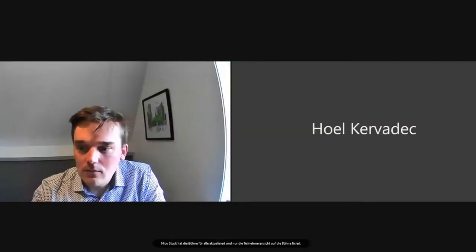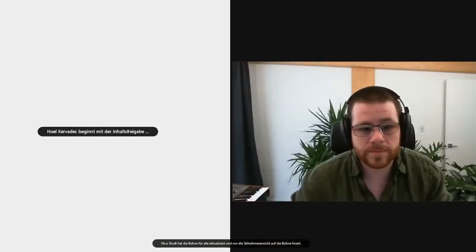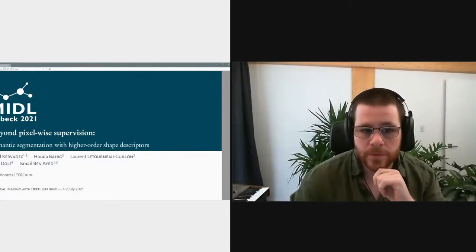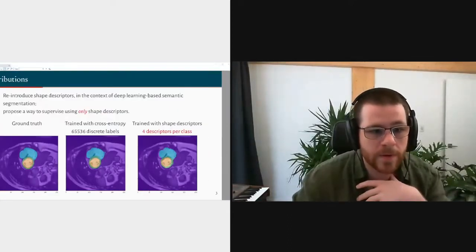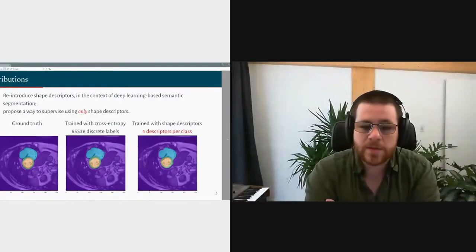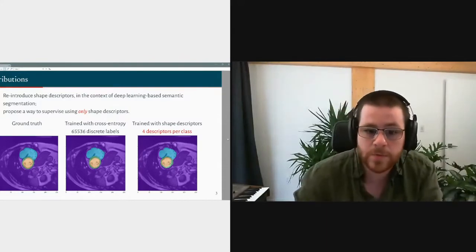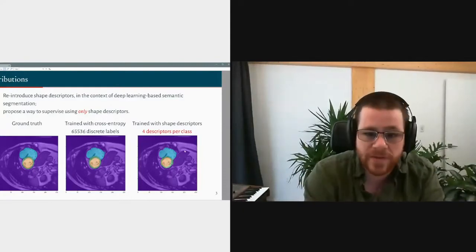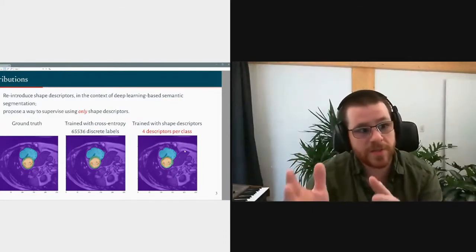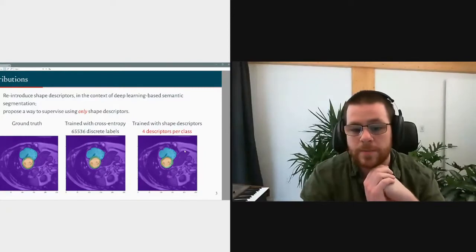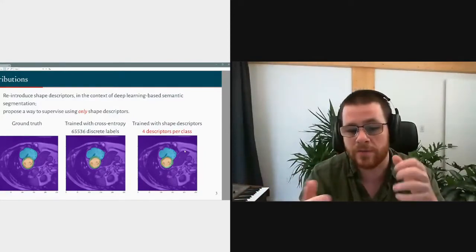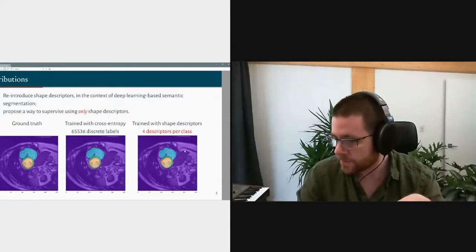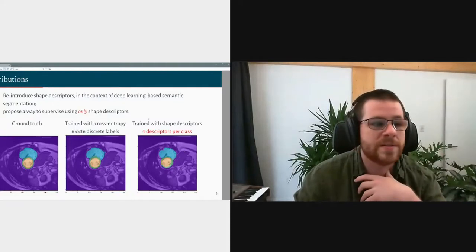I am Ol Carvadek and I'll be presenting our work on beyond pixel-wise supervision. To give a quick overview: instead of supervising a neural network at training time using individual pixel labels, we decided to see if we could supervise the network not by describing what class each pixel should have, but instead by describing to the network in general where the object should be and what shape it should have. We didn't want to micromanage the pixels of the network output but rather simply describe where it should be.